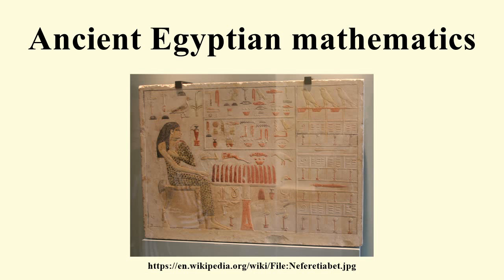The king's daughter Neferiabet is shown with an offering of 1,000 oxen, bread, beer, etc. The Egyptian number system was additive: large numbers were represented by collections of glyphs, and the value was obtained by simply adding the individual numbers together. The Egyptians almost exclusively used fractions of the form 1/n. One notable exception is the fraction two-thirds, which is frequently found in the mathematical texts. Very rarely a special glyph was used to denote three-quarters. The fraction one-half was represented by a glyph that may have depicted a piece of linen folded in two. The fraction two-thirds was represented by the glyph for a mouth with two strokes. The rest of the fractions were always represented by a mouth superimposed over a number.